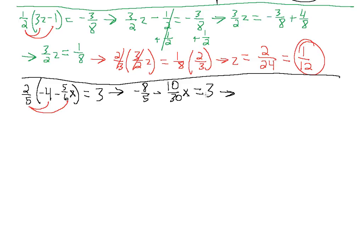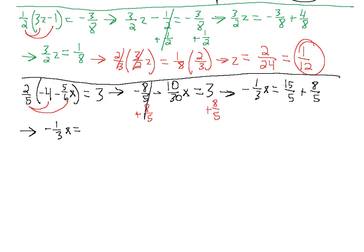Next we want to move our minus 8 over 5 to the other side by adding 8 over 5 to both sides, because plus 8 over 5 and minus 8 over 5 will cancel. We can also simplify 10 over 30 to 1 over 3 as we go — simplifying as we go will make calculations much easier. So we have minus 1 over 3x equals 3 plus 8 over 5. Let's rewrite 3 with a denominator of 5: 3 is 15 over 5, plus 8 over 5. We have minus 1 over 3x equals 23 over 5.